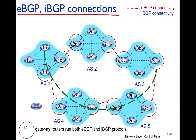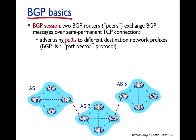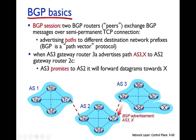There are two BGP sessions to explain. Autonomous system 3's gateway router 3A advertises to gateway 2C that network X can be reached through autonomous system 3 — written as AS3, X. When 3A advertises this path information to 2C, it means autonomous system 3 is promising autonomous system 2 that it will forward data destined for network X.